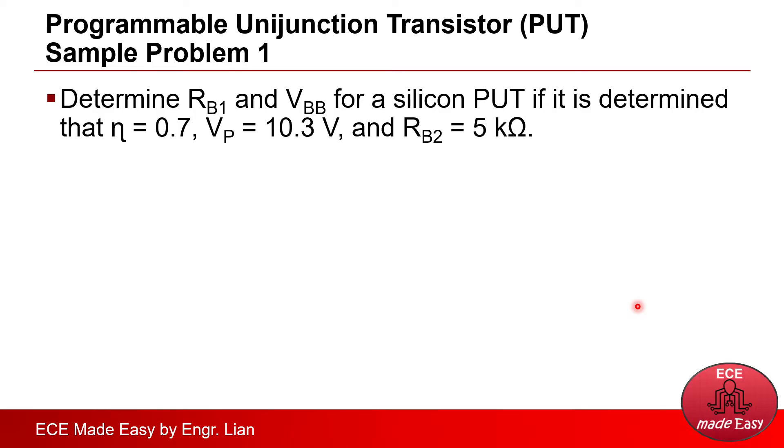Okay, let's proceed to problem number one. Determine RB1 and VBB for a silicon PUT if it is determined that the standoff ratio eta is 0.7, the VP is 10.3 volts, and RB2 equals 5 kilo ohms.